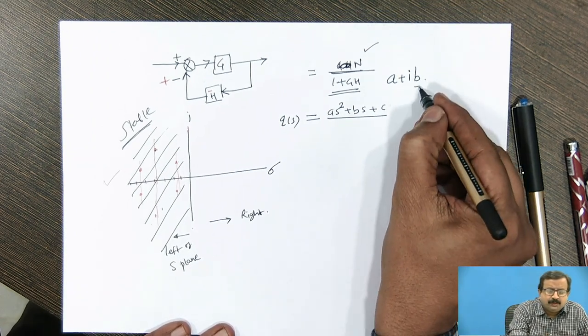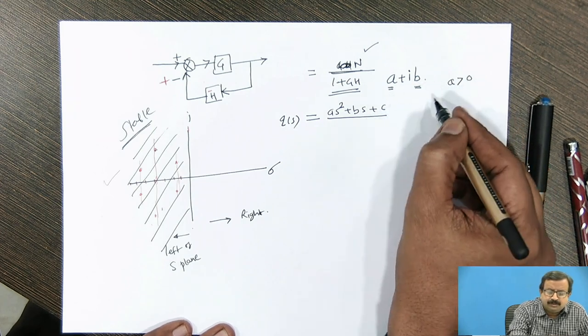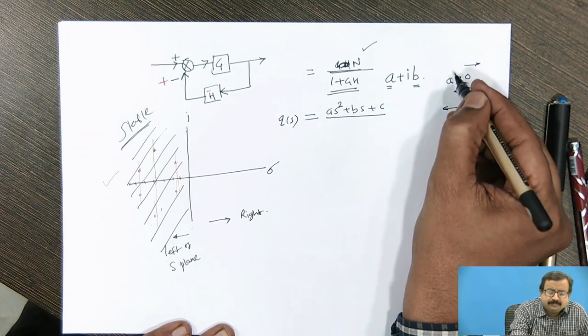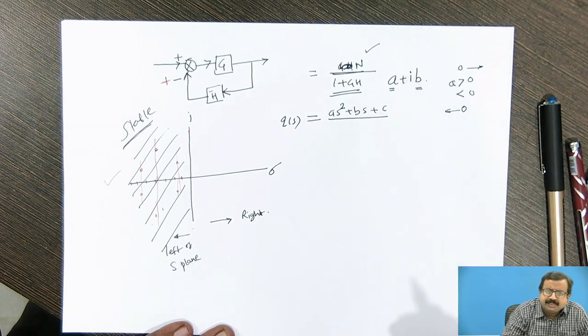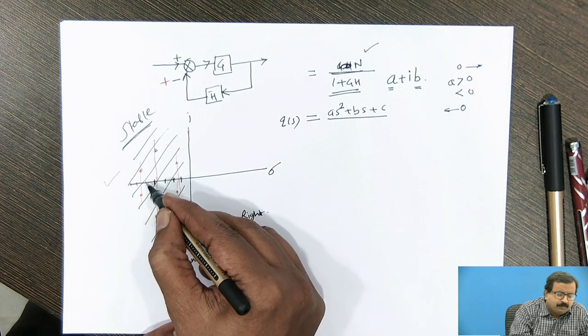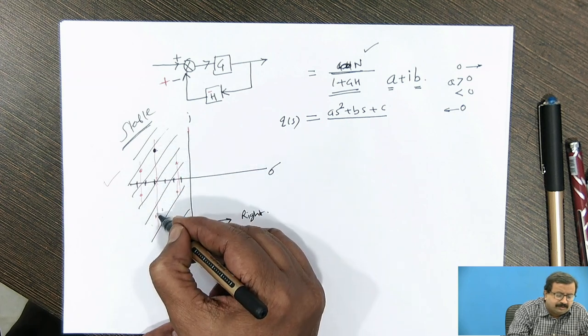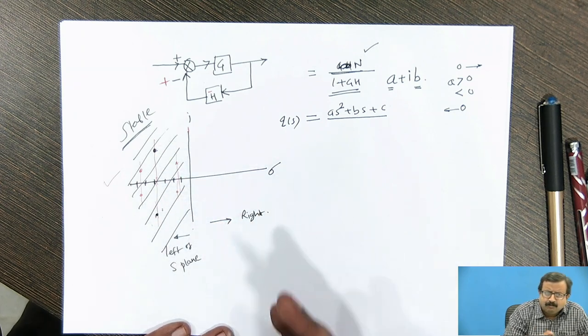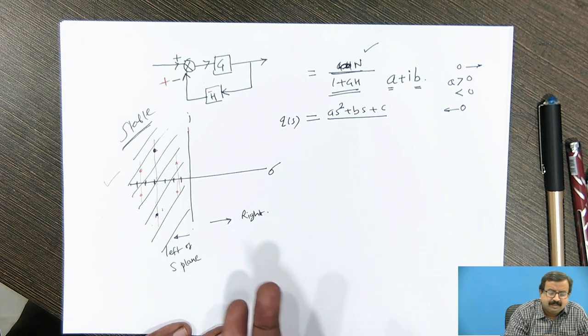When B is 0, it is a real number. When A is greater than 0, it is to the right side. If A is less than 0, it is to the left side of 0. And if A is 0 and B is 0, it is the origin. When my root is lying on this axis, it is going to be on the negative real axis. And if the root lies on the complex plane, if it is a quadratic, both the roots must be complex conjugates because there is a necessary condition. That is the first part.